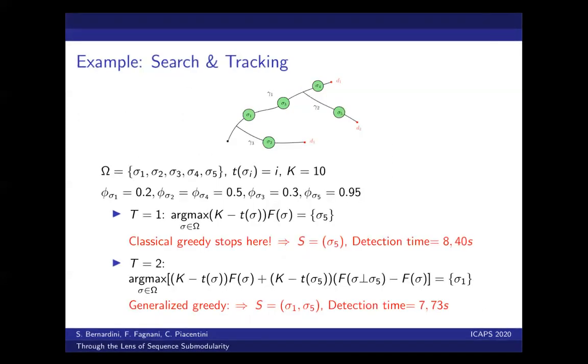Now if we go back to our search and tracking application, let's see a particular instance in which we have five search patterns from sigma1 to sigma5. If we consider the classical greedy algorithm, it will pick sigma5 first because it is associated with the highest detection probability. However, then the algorithm won't be able to extend this sequence on the right hand side, and so it will end with a sequence with just one pattern, sigma5 and a detection time of 8.4.